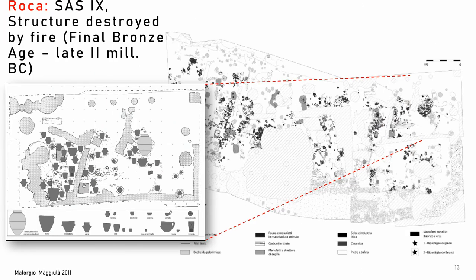The last example, edited in 2011, is a structure dated to the final Bronze Age from the settlement of Loca, destroyed by fire, and is very similar to what we have seen for the Filicudi and Morgantina structures. The distribution concerns only the artifacts, especially the well-preserved vessels characterized according to typological classes.